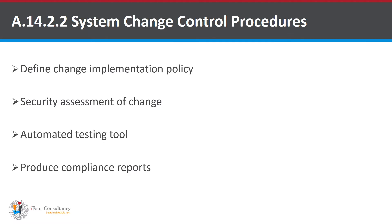The second one is System Change Control. It states that changes to systems within the development lifecycle shall be controlled by the use of formal change control procedures. This means that a change implementation policy must be defined, assessment of changes must be done with respect to security measures, automated testing tools are available to identify and assess such changes, and regular reports must be produced with respect to compliance of such procedures.